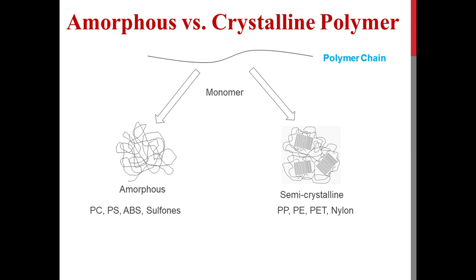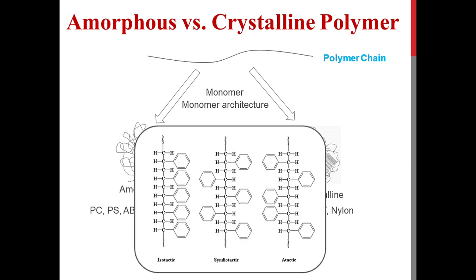However, it is not necessary that if a chain is flexible it will always form a crystalline phase. Crystallinity also depends upon the orientation of side groups in the polymer chain. For example, the side groups of polystyrene can be oriented in different ways. A chain which is symmetric — like isotactic and syndiotactic chains — can form crystalline phase, but not the asymmetric atactic chain. So a polymer chain containing side groups can be either amorphous or crystalline.